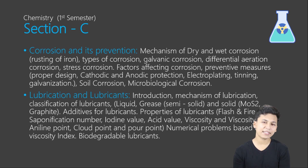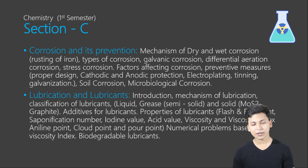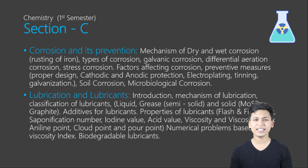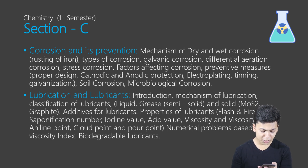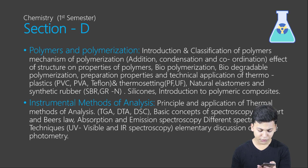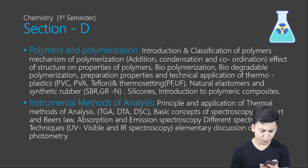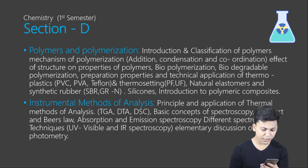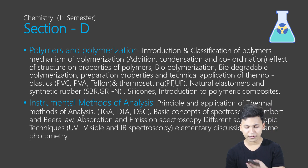The chemistry syllabus is not that tough and you can of course handle it — if you have studied your class 11 and 12 chemistry well, these topics will be very familiar to you. Section D involves polymers and polymerization, which covers introduction and classification of polymers, mechanism of polymerization, effect of structure on properties, biopolymerization, and specific polymers like PVC, PVA, Teflon, thermosetting resins like PF, and natural elastomers.